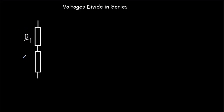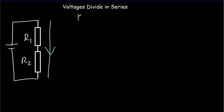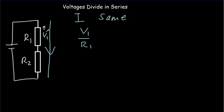Let's suppose we've got two resistors joined in series, R1 and R2, and let's connect a battery across those two resistors. There are two things we know. One thing we know is the current has to be the same through both resistors. Using Ohm's law — current equals voltage over resistance — the current through R1 has to be V1 over R1, where V1 is the voltage across R1. And that has to equal V2 over R2, where V2 is the voltage across R2.